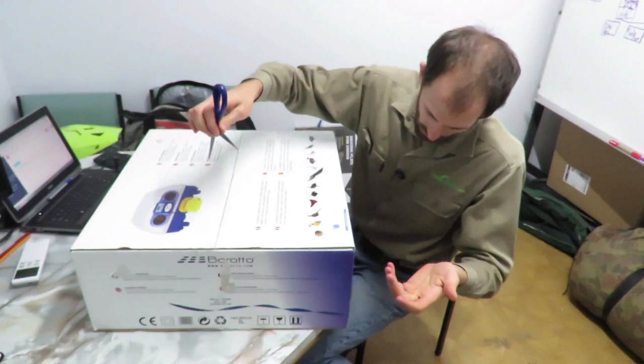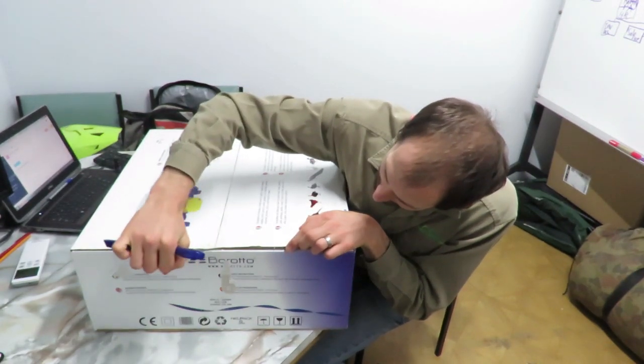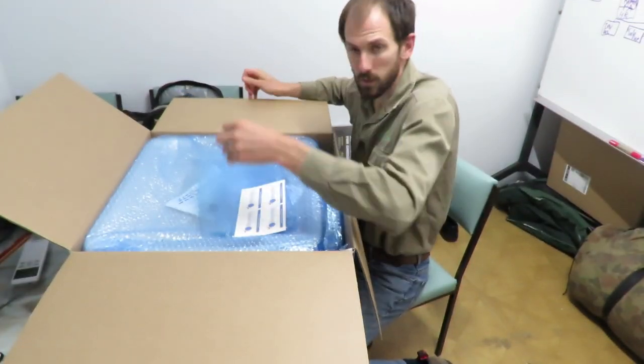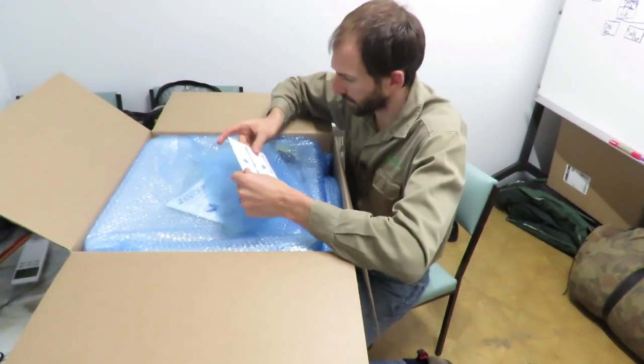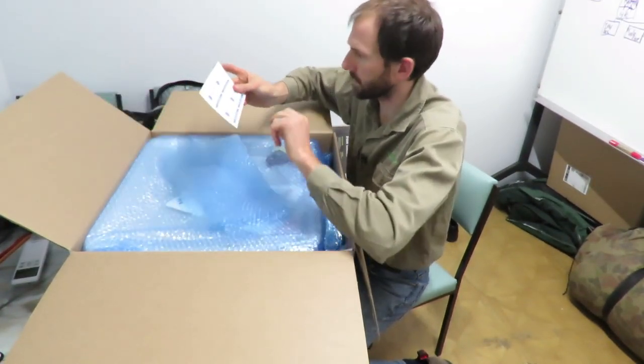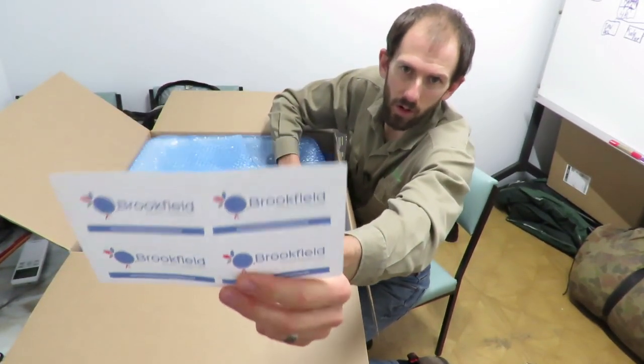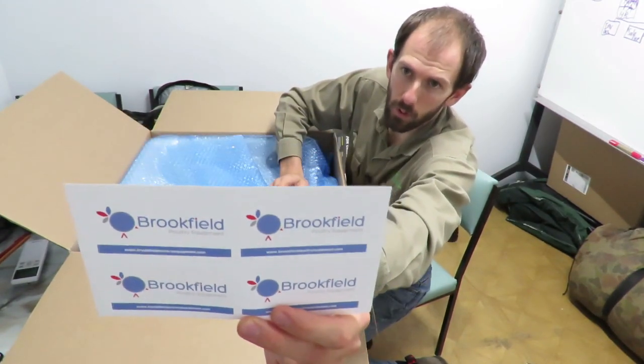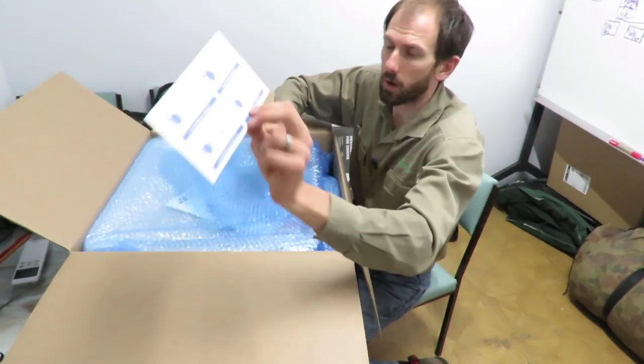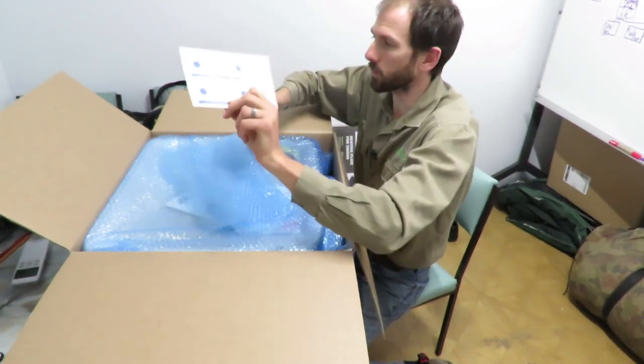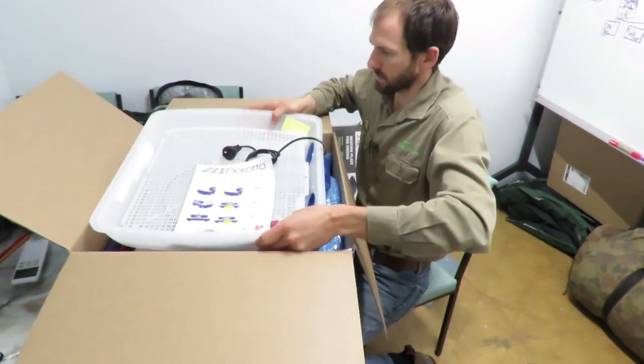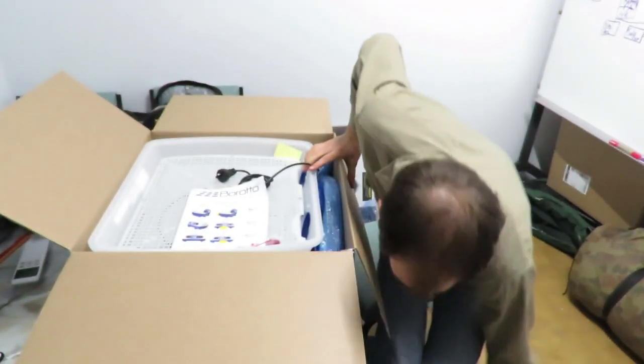So this Borotto incubator holds 49 eggs. So if you're in Australia and want to buy a Borotto incubator, you get it from Brookfield Poultry. I've dealt with Brookfield Poultry. I find them good to deal with. Let's just lift the whole thing out and put it on the bench.